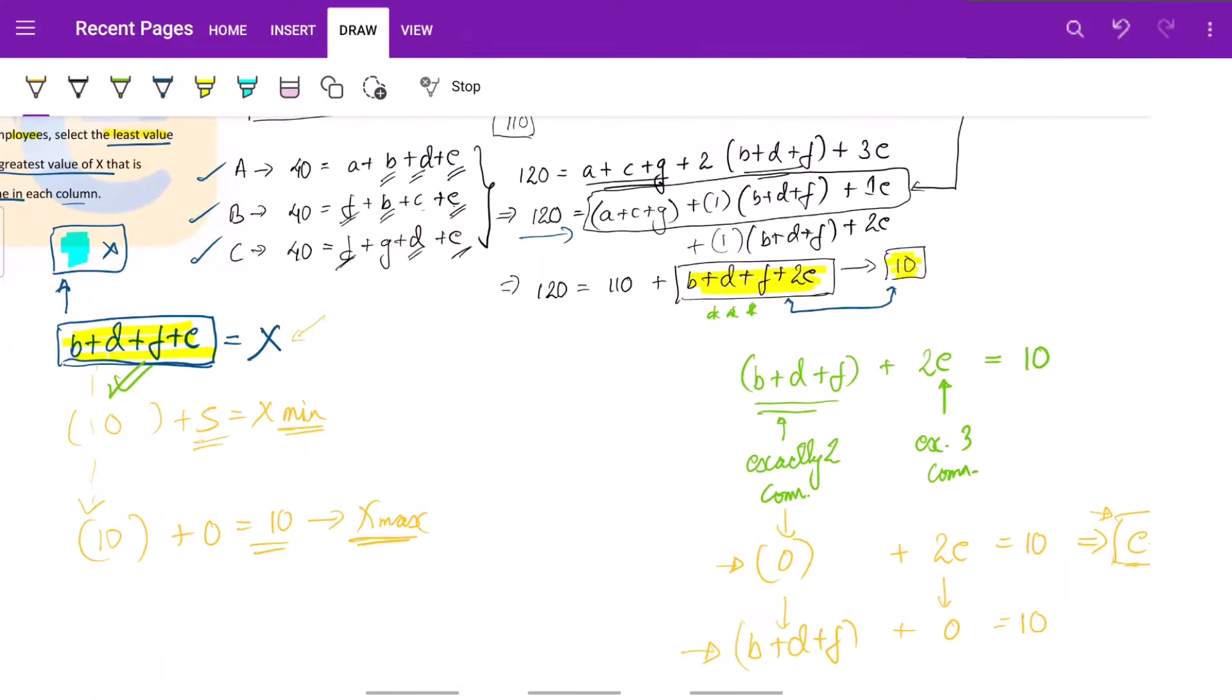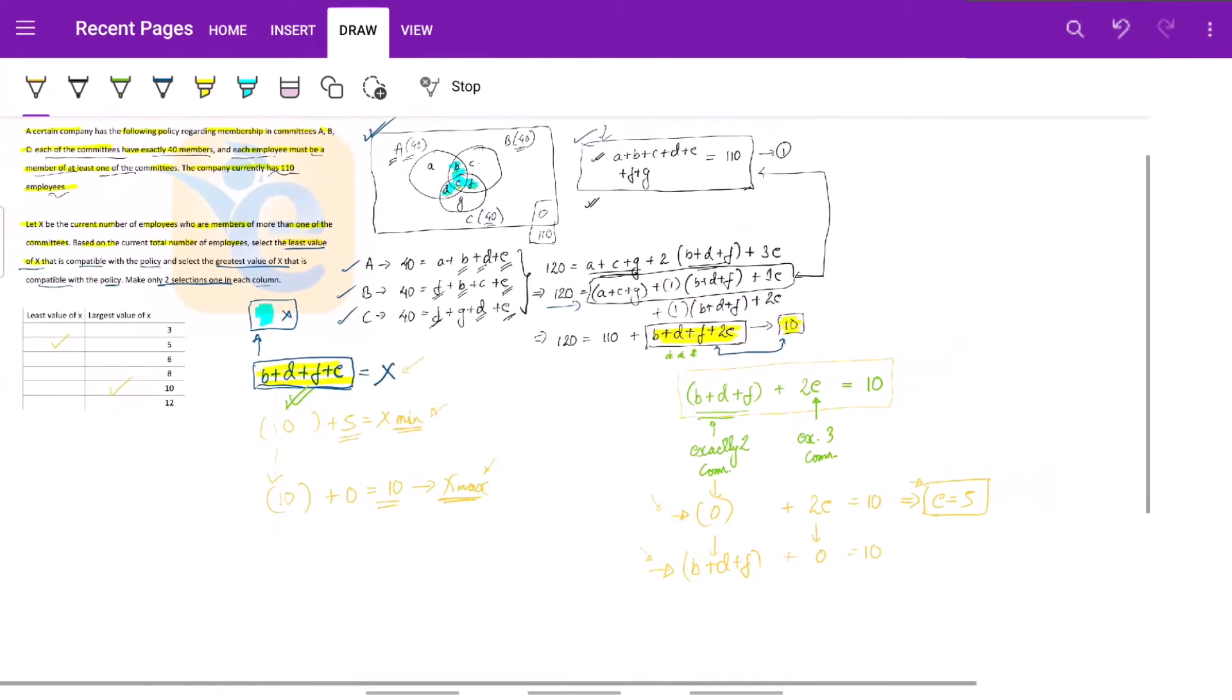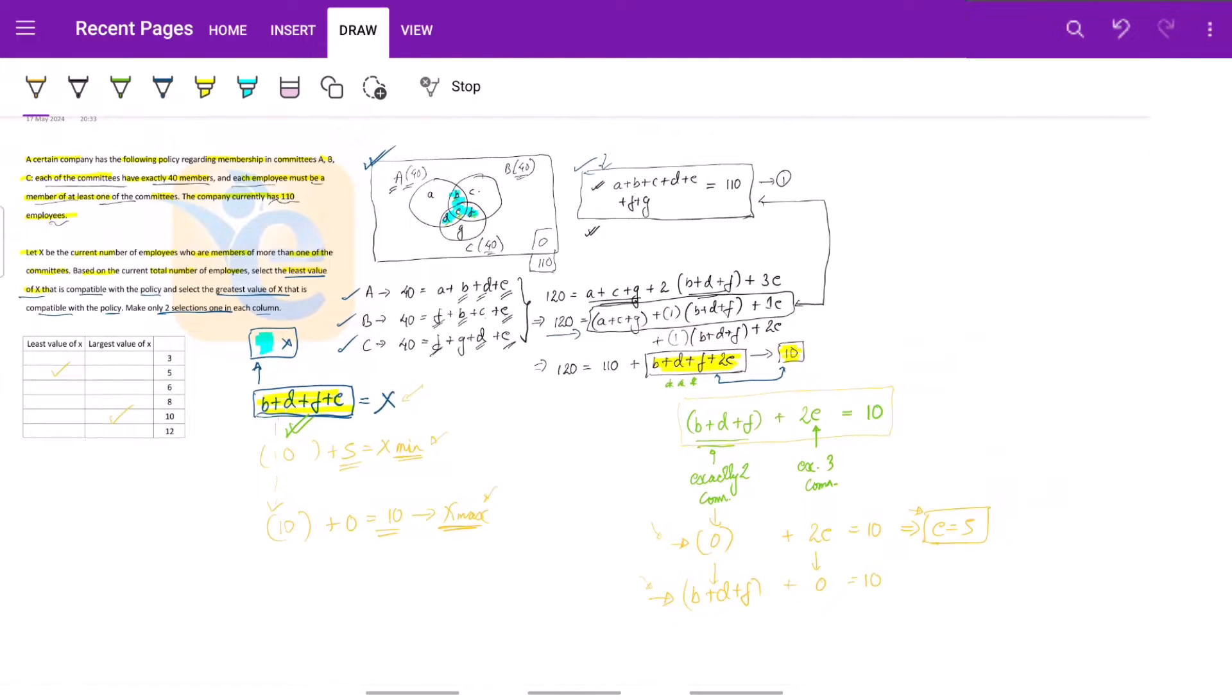We exactly pointed out what we need to minimize or maximize, then we had our equation according to which we were minimizing and maximizing. We took case 1 to minimize, case 2 to maximize, put that in the equation and got our values. So this is a very systematic question, you have to systematically step by step write down and march towards your answer. Hope it helps. Thanks.